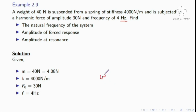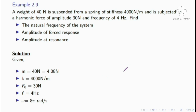Omega is equal to 2 pi into f. With f equal to 4 Hertz, omega equals 2 pi multiplied, giving 8 pi radian per second. Converting this value gives the external frequency in radian per second.